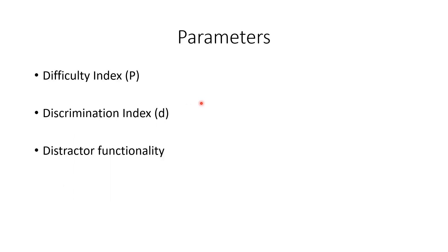There are three parameters that we calculate during item analysis. One is the difficulty index, denoted by P. The second is the discrimination index, denoted by D. And the third is distractor functionality, also called distractor effectiveness or distractor efficiency.